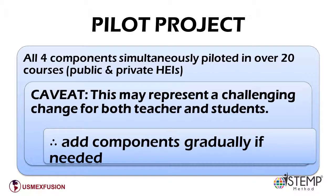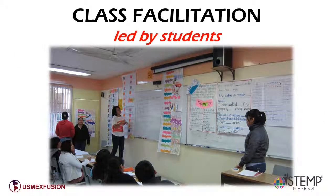The first component is class facilitation, led by students. This component is probably the most important of all. Empowering students means letting them learn autonomously so they are prepared to facilitate a class and topic. Empowering students also means letting them do, so that they take responsibility of the teaching and learning process for themselves and their classmates. We also need to let the students be, so that they are able to tap into their individual aptitudes, previous knowledge, and creativity without the teacher stepping in until needed.